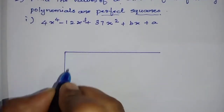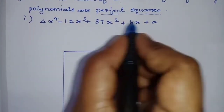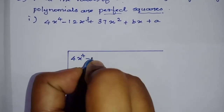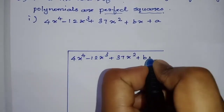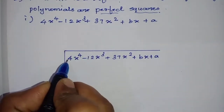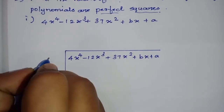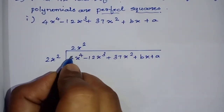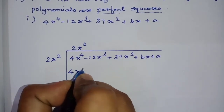We use the long division method. First, write the polynomial in ascending order: 4x⁴ minus 12x³ plus 37x² plus bx plus a. Split 4 as 2², so the first term is 2x². Multiply 2x² by 2x² to get 4x⁴.